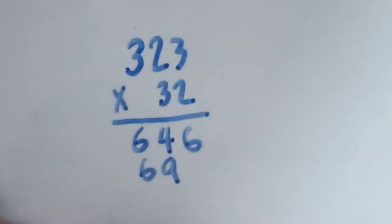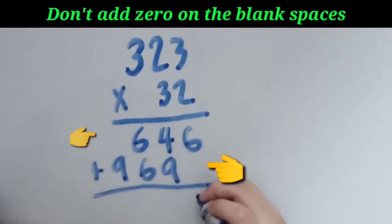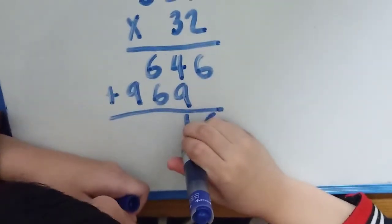And 3 × 3 is 9 once again. Don't add 0 on the blank space. Bring down the 6. 9 plus 4 is 13.